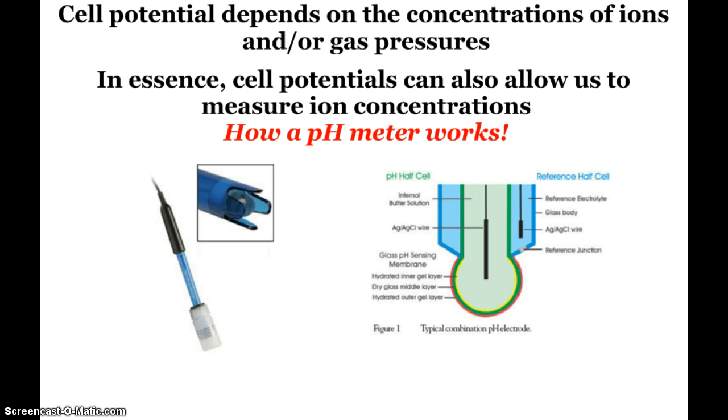So we can see that our cell potential does, in fact, depend on the concentration of ions or gas pressures. And so if we have these cell potentials, we can easily also figure out the ion concentrations. And this is pretty much how our pH meter works. And you can see a little picture here of our Vernier probe. And I'm not going to pretend to be an expert on this, but essentially you have an electrode. And we've got a nice pH-sensing glass membrane. And essentially, when you put that into a solution, it recognizes the cell potential difference. And then a little program in your LabQuest changes that to a pH value for you.